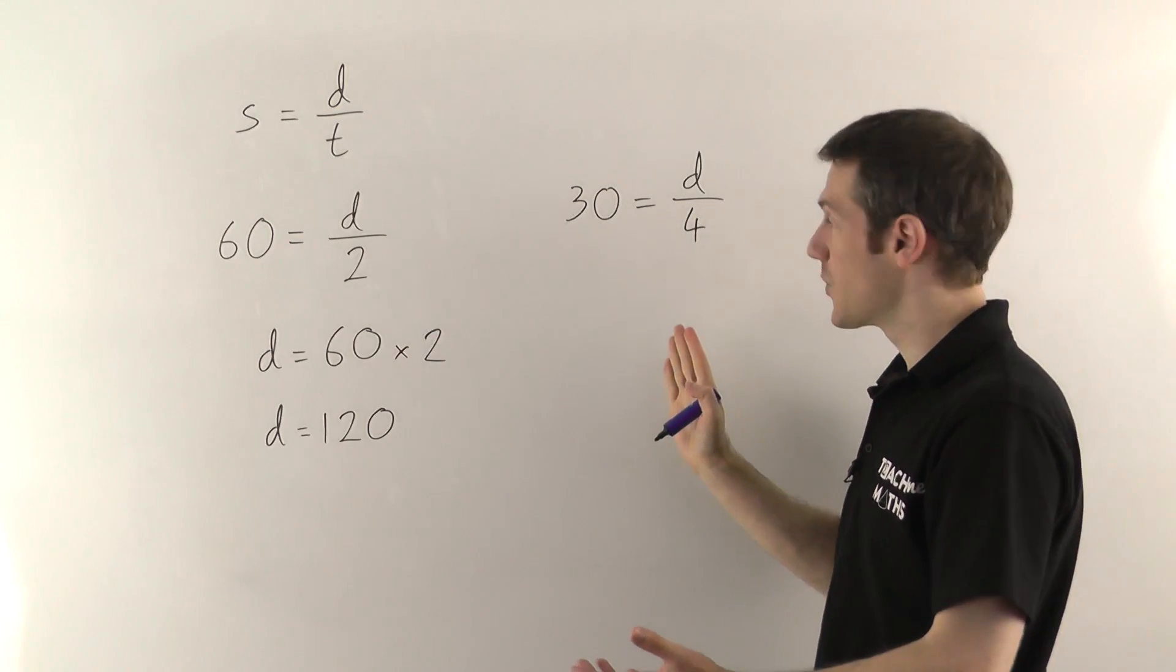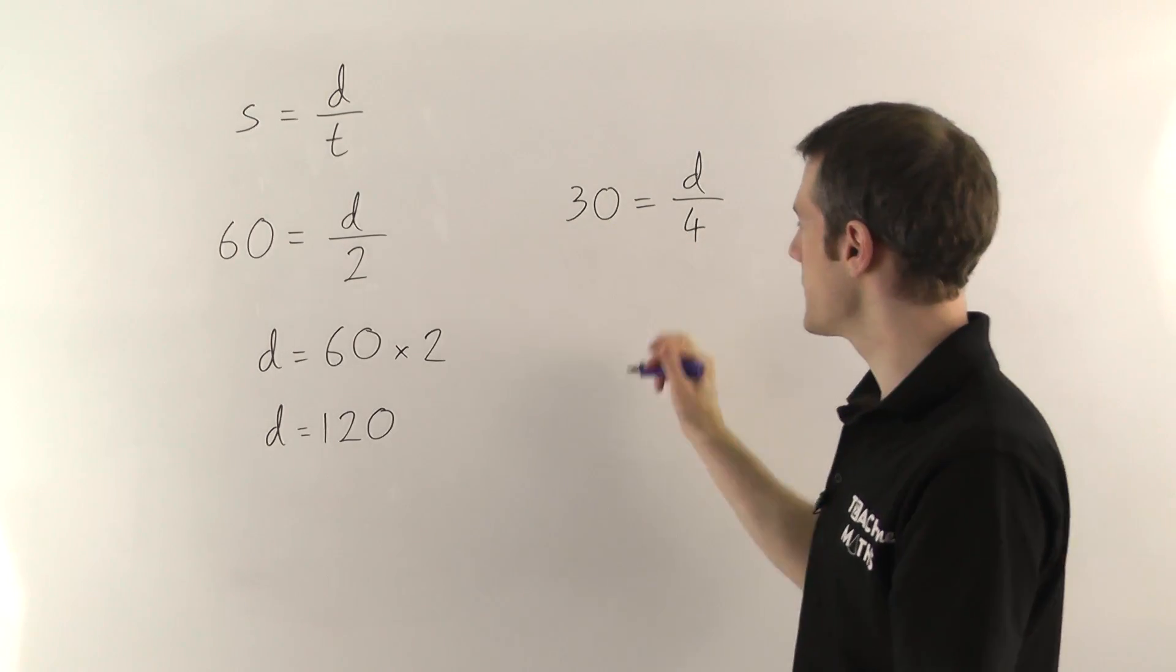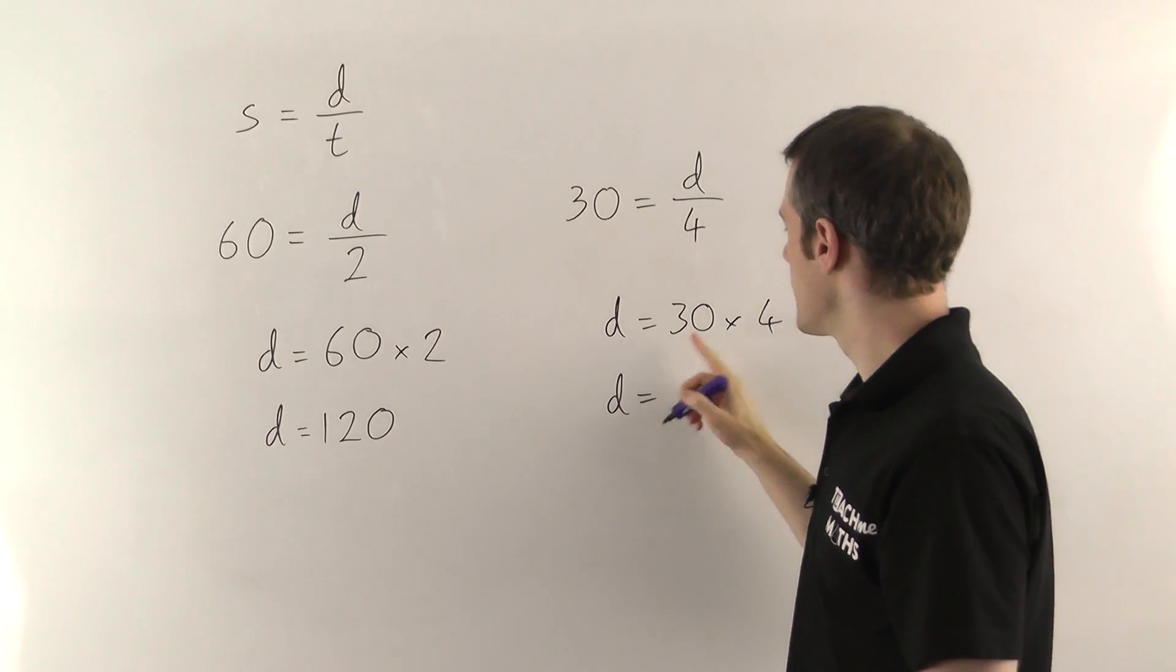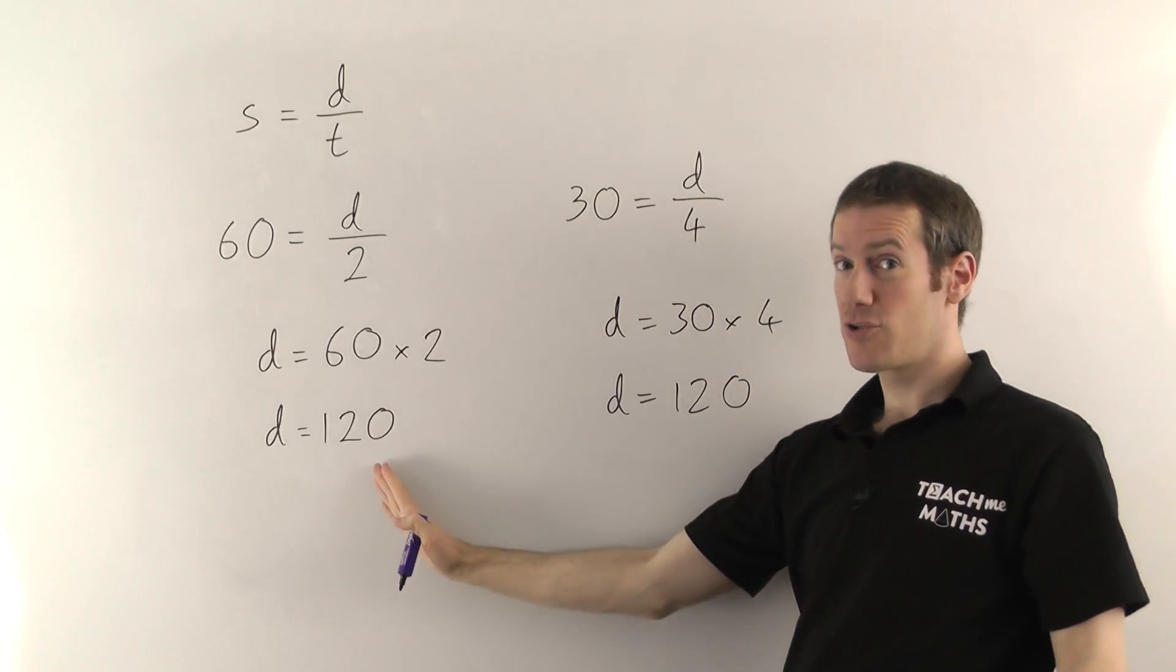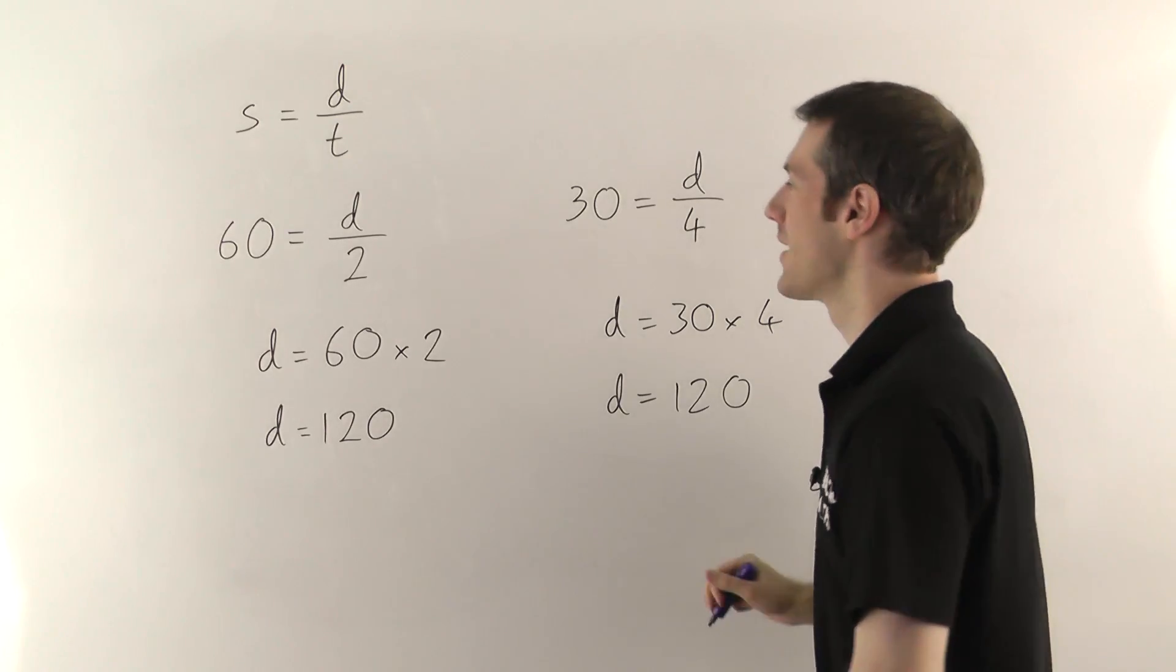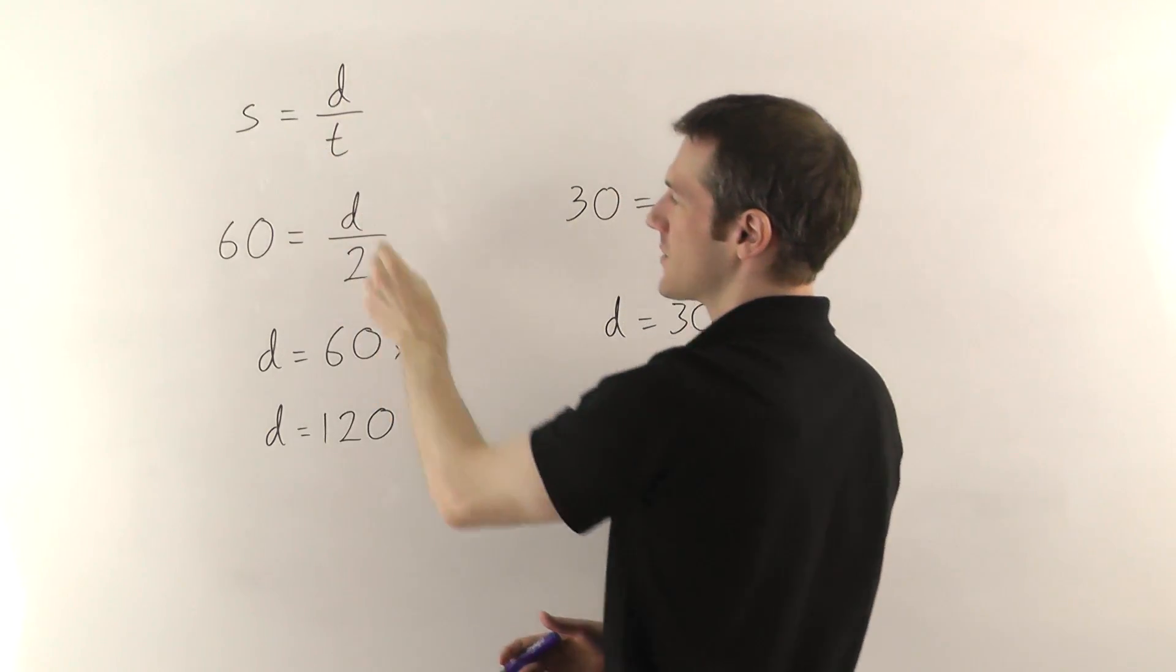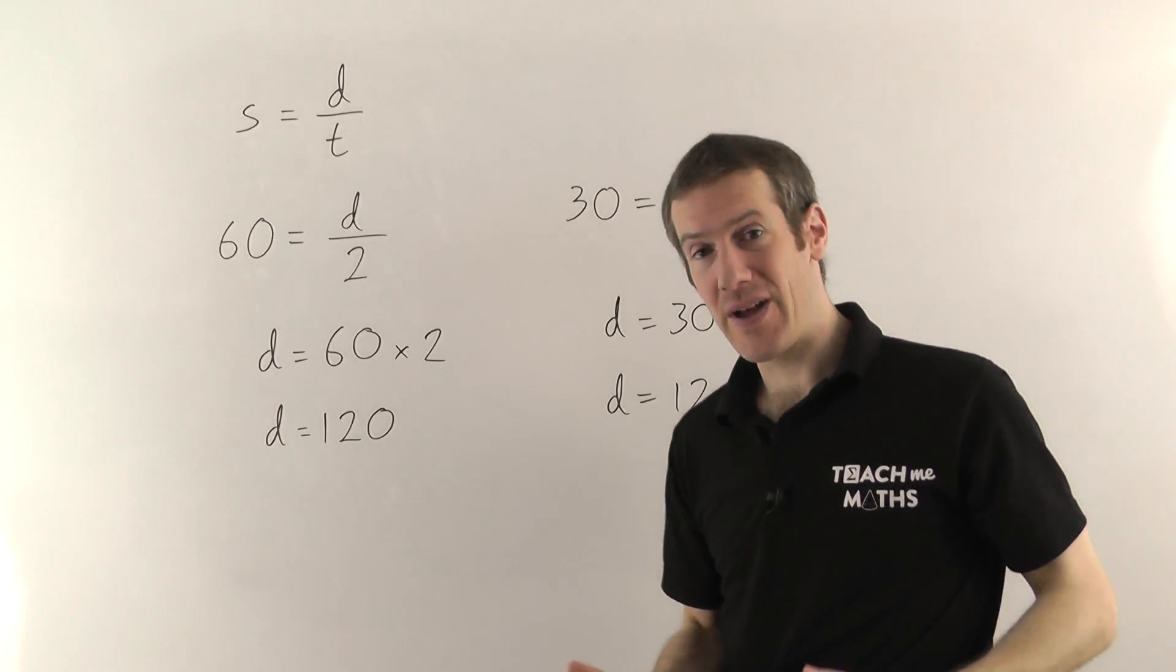So again we could solve the equation. If I multiply both sides by four this time to get the D by itself, I'll swap the sides as well so we can see what D is. So D would be 30 this time times by the four. 30 times four is 120. So again this is pretty strong evidence now. I've done the journey twice. I found the same distance both times and obviously I could do this a whole bunch of times. But getting different speeds and different times, shoving them in this equation and then solving them again and again and again can get very repetitive.